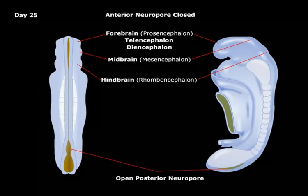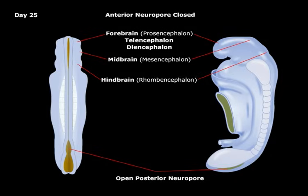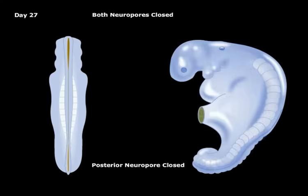These three develop later into five secondary vesicles. The forebrain develops into the telencephalon and diencephalon. The midbrain develops into the mesencephalon. The hindbrain develops into the metencephalon and the myelencephalon. The caudal neural pore then closes on day 27.